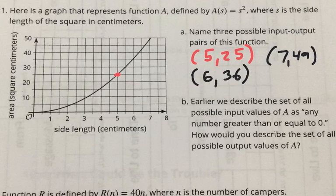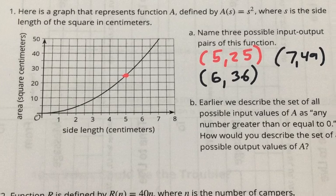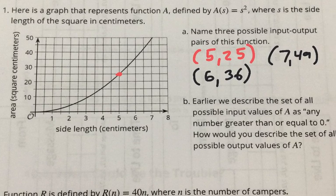Earlier we described the set of all possible input values as any number that was greater than or equal to zero. How would you describe the set of all possible output values? If you think about the input, that's the x's. As long as we plug in a positive number or zero, we're good. What about the outputs? What about the y's? What's the lowest y value? Zero.